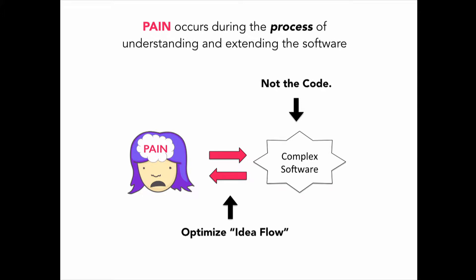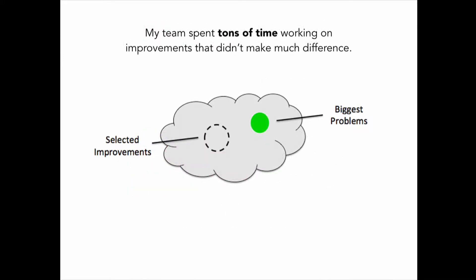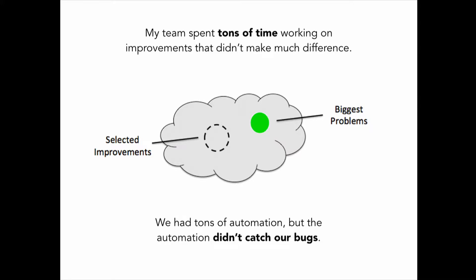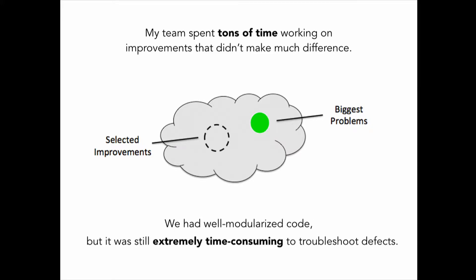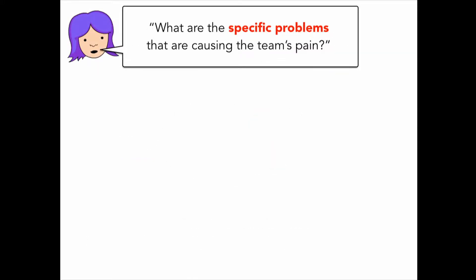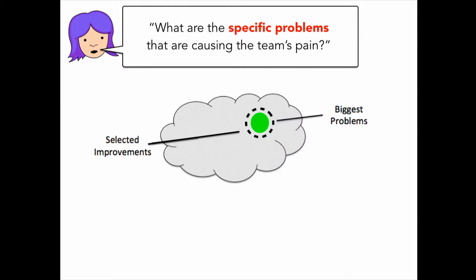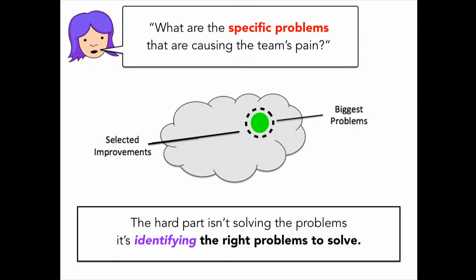I did that with the help of a data-driven feedback loop. My team ended up spending tons of time working on improvements that didn't really make much difference for almost a year. We had tons of automation, but the automation wasn't catching our bugs. We had modularized code, but it was still extremely time-consuming to troubleshoot defects. Then we started asking: what are the specific problems that are causing the team's pain? That's really when everything changed. I learned one of the most valuable lessons of my career: the hard part isn't solving the problems, it's identifying the right problems to solve.